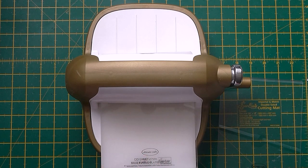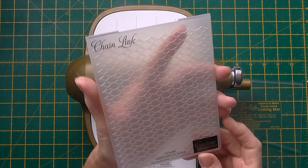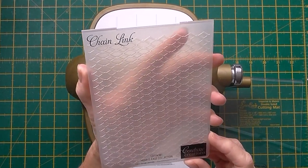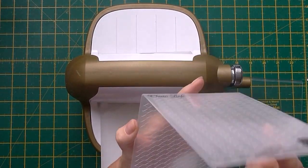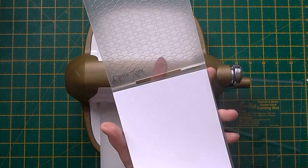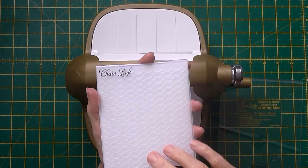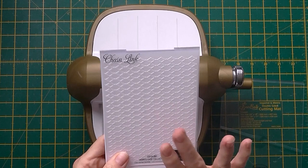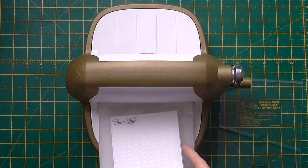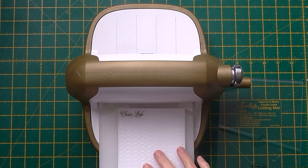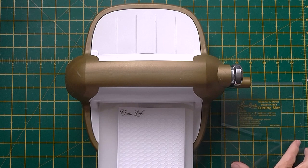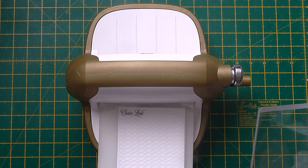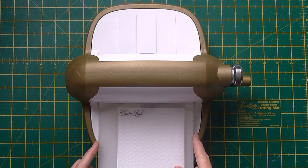and then I'm going to take an embossing folder. So this is the chain link folder from Couture Creations and I'm going to open that up and put some card in between the two layers. Once I've done that I'm going to sit this on top of that last B plate that I put on here and then my final part of my sandwich is the final B plate and that sits on top.